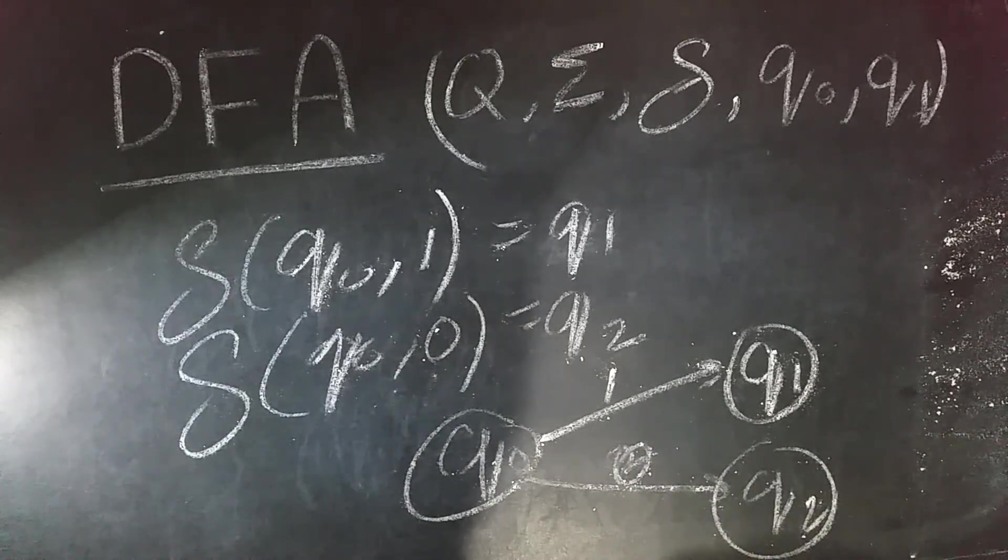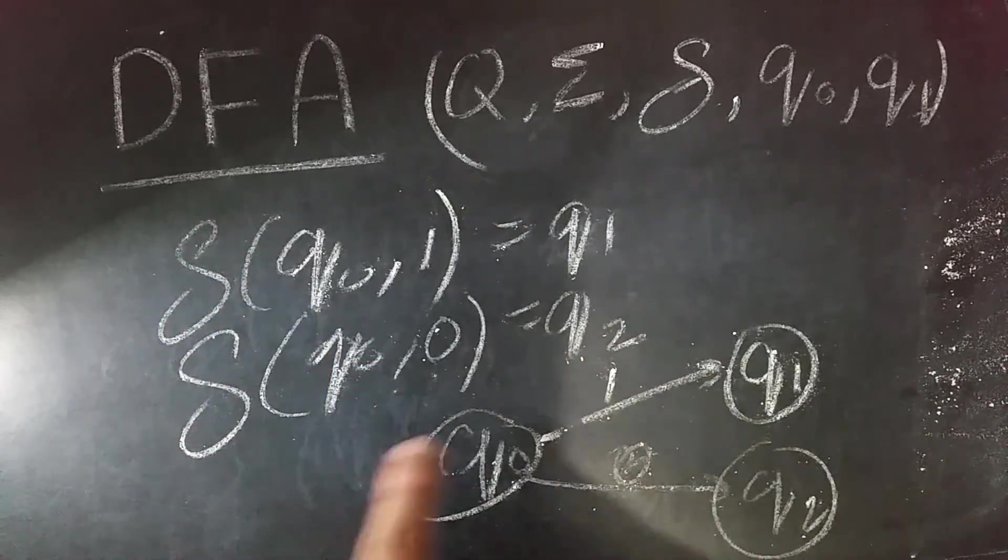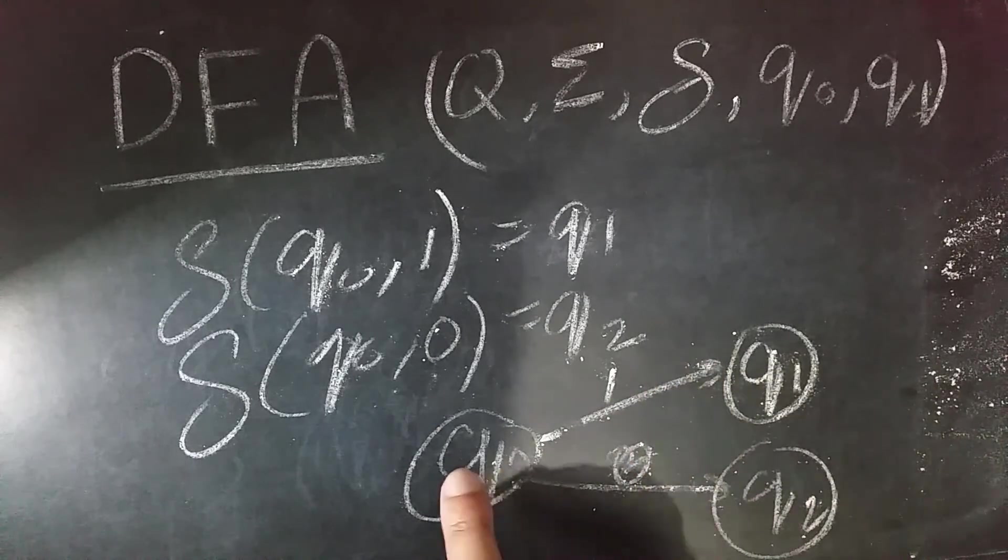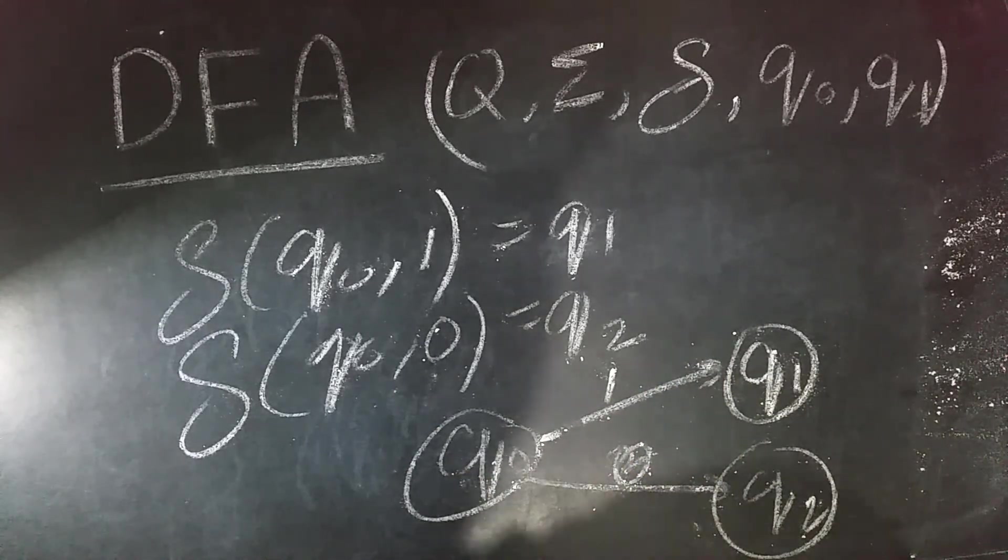Since there are two transitions on one state, but the inputs are both different—it is not a DFA when the inputs are the same. Since the inputs are different, and for each input there is only one transition (for 1, for 0), hence it is a DFA.